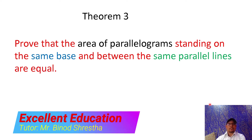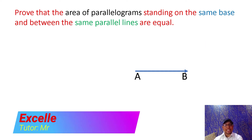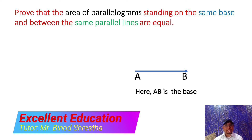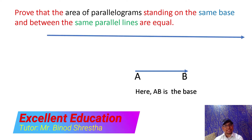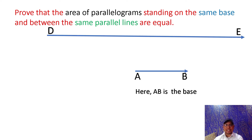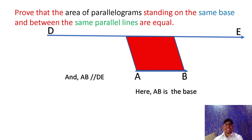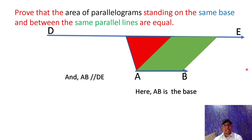Now here is a line AB which is a base. DE is another line such that AB is parallel to DE. You are seeing a red parallelogram which is standing on the base AB and between the same parallel lines AB parallel DE. You see another parallelogram which is in green color, which is also standing on the base AB and between the same parallel lines AB parallel DE.